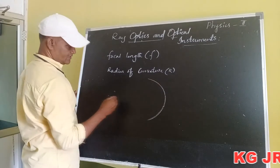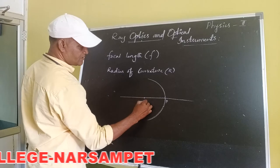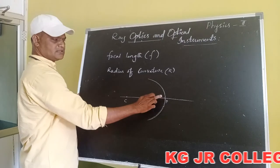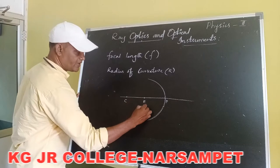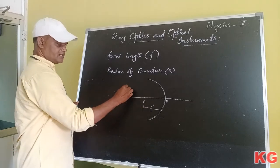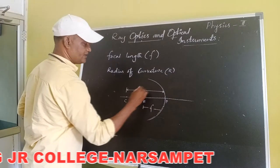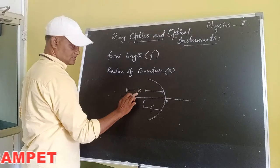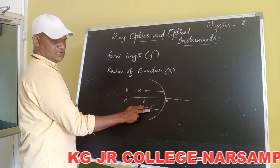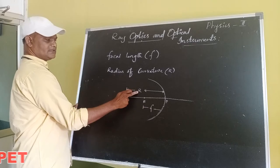This is the spherical mirror. This is the pole of the mirror, this is the principal focus, and this is the center of curvature. The distance between the pole of the mirror and the principal focus is known as focal length, denoted by f. The distance between the center of curvature and the pole of the mirror is known as radius of curvature, denoted by r. We generally observe that the radius of curvature equals two times the focal length, and now we will derive that relation.